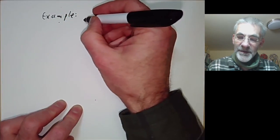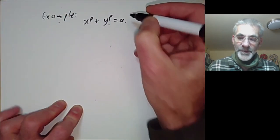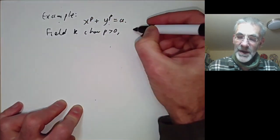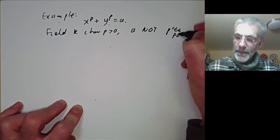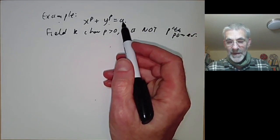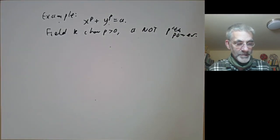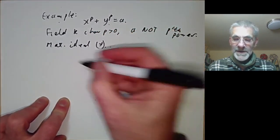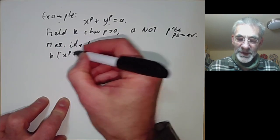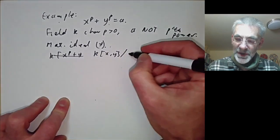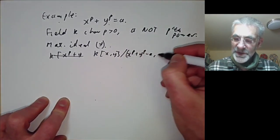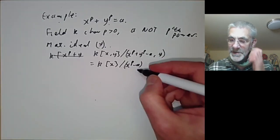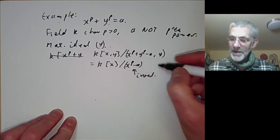Let's take the curve x^p + y^p = a, where we're working over a field k of characteristic p > 0 and a is not a p-th power. In particular the field can't be algebraically closed. This has a maximal ideal given by y, because if we take k[x, y] modulo (x^p + y^p − a) and also quotient out by y, this is just k[x]/(x^p − a), which is irreducible since a is not a p-th power, so this is a field.